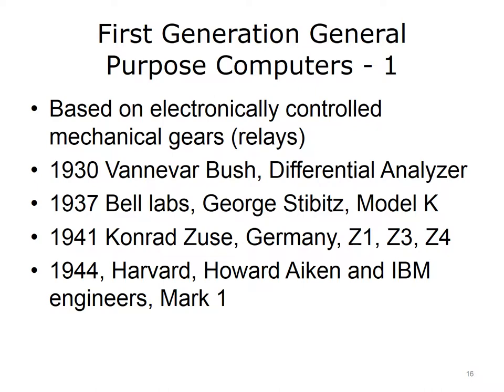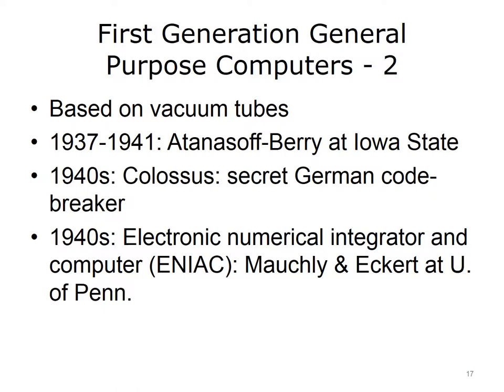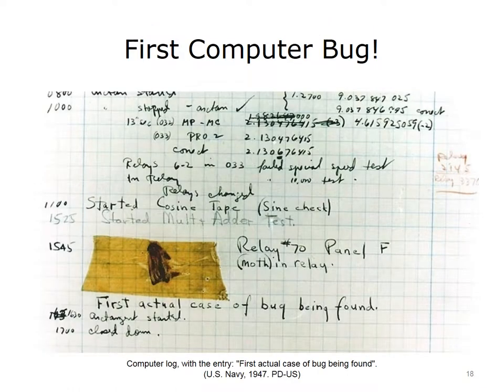There were several of these machines created at about the same time. Also at this time, there were a number of general purpose computers based on vacuum tubes instead of relays — there is the Atanasoff-Berry computer, the Colossus machine used for German code breaking during World War II, and the ENIAC (Electronic Numerical Integrator and Computer) developed at the University of Pennsylvania. Along with the development of computers came the onset of computer bugs.